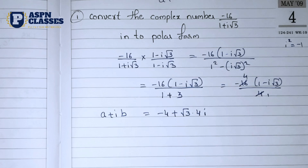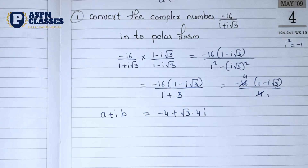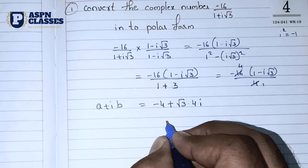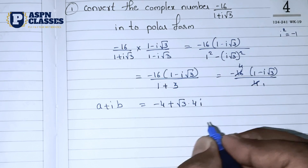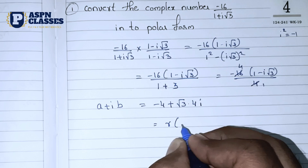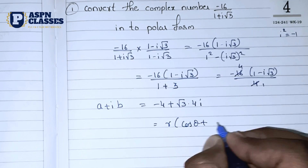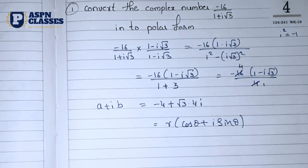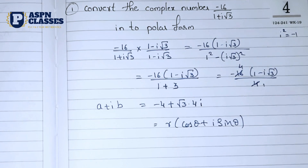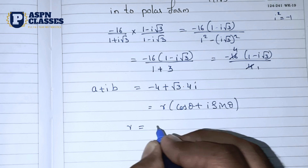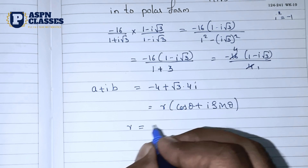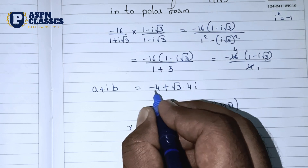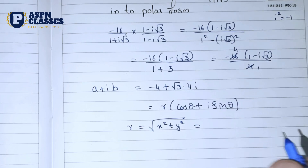Now we have to convert to polar form. The polar form formula is r into bracket (cos theta plus i sin theta). We have to find r and theta. The formula is r equals square root of x squared plus y squared, where x is the real part and y is the imaginary part.